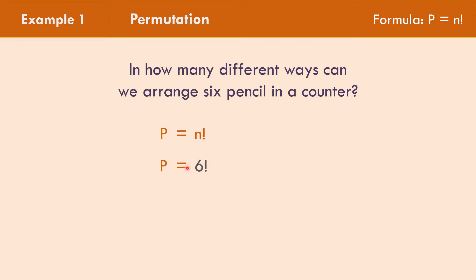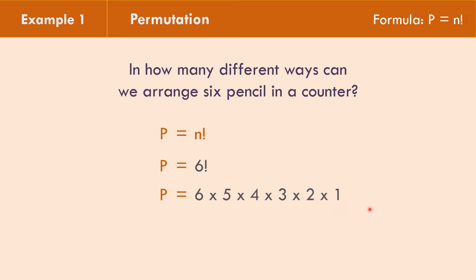6 factorial in factored form is 6 times 5 times 4 times 3 times 2 times 1. Multiplying: 6 times 5 is 30, times 4 is 120, times 3 is 360, times 2 is 720, times 1 is 720. The permutation is equal to 720 arrangements. So the arrangements that can be made with the pencils is 720.